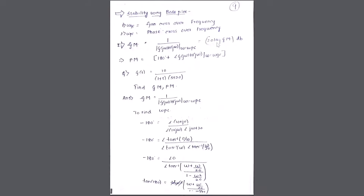If you need to find the dB value of gain margin, it is 20·log(GM). Similarly, phase margin is equal to 180° plus the angle of G(jω)·H(jω) at ω = ω_gc. The gain crossover frequency is denoted ω_gc, the phase crossover frequency is ω_pc, and the gain margin is 1 upon |G(jω)·H(jω)| at ω = ω_pc.